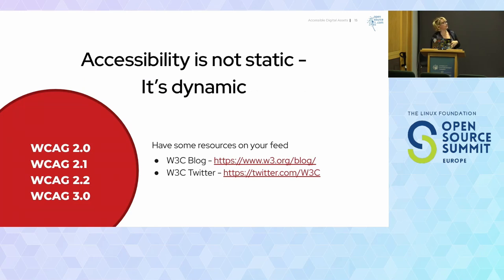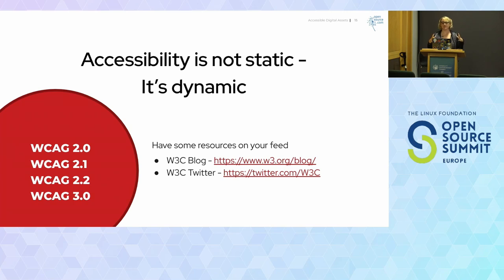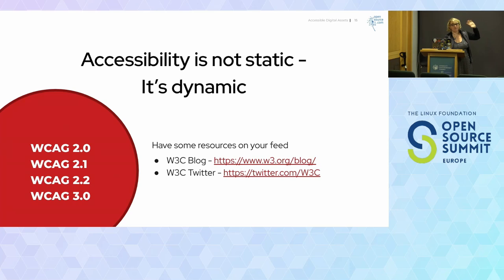We need to remember that accessibility is always a moving target. It's dynamic. Especially when we're entering content into our project pages every day, changing up our READMEs, or changing how the JavaScript works. Just because our digital asset was accessible yesterday doesn't mean it's accessible today — especially when you have a team of engineers or content authors working on it. The W3C has a blog and a Twitter account where everything current gets mentioned.